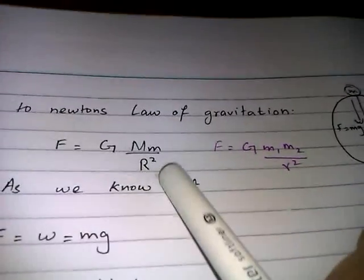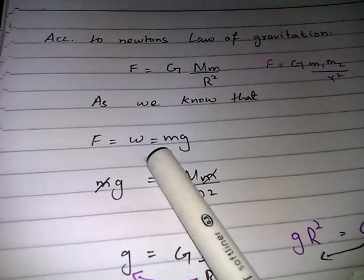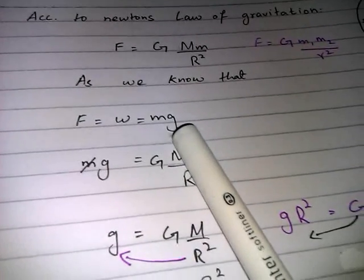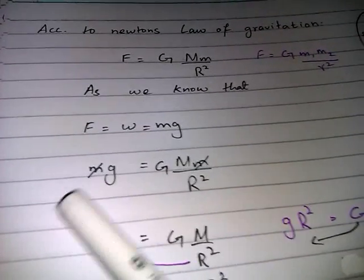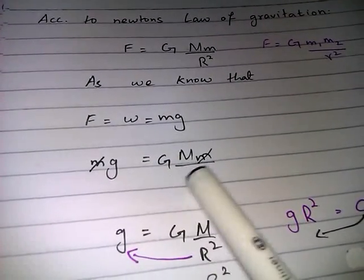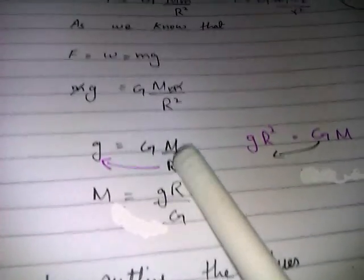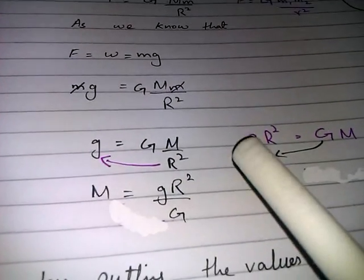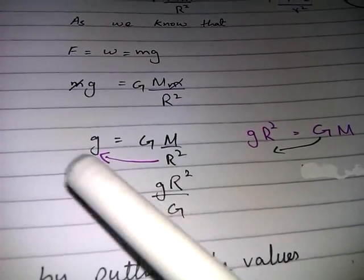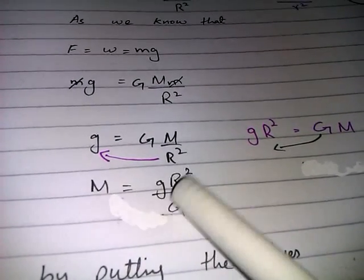So F is equal to GMm over R squared. From here as we know that F is equal to W which is equal to mg. By putting the value of force into this equation we get that mg is equal to GMm over R squared. Where m is cancelled by this m and we are left with this: g is equal to GM over R squared. Now to find the mass of Earth we have that M is equal to gR squared by G.